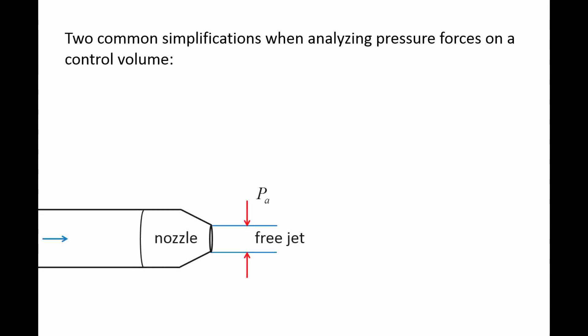The first approximation involves free jets, which are streams of fluid that are exposed to the atmosphere. Here we have a nozzle connected to the end of a pipe, and a free jet exits the nozzle into the atmosphere. Since the free jet experiences atmospheric pressure, the pressure at the outlet of the nozzle is atmospheric as well. So the first approximation is that any outlet that emits a free jet will experience atmospheric pressure at the exit.